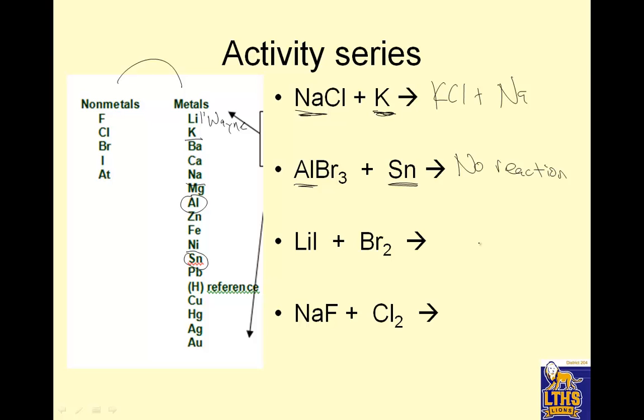LiI and Br2. Bromine is a nonmetal, so it has to replace iodine if it can. So bromine, can bromine replace iodine? Yep, it's higher up. So I get LiBr plus I. Now iodine is diatomic, so I throw a 2 here. And I've got some balancing issues. To get two iodines on both sides, there's two on the right, I put a 2 here, which gives me two lithiums and two iodines. But I need two lithiums, which gives me that. And look, that fixes my bromines. NaF plus Cl2. So chlorine is a nonmetal, so it's going to try and replace fluorine. Chlorine replacing fluorine, nope, that's like Jennifer Aniston trying to get Brad Pitt back. That gives you no reaction.